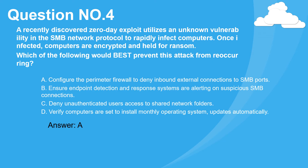A. Configure the perimeter firewall to deny inbound external connections to SMB ports. B. Ensure endpoint detection and response systems are alerting on suspicious SMB connections. C. Deny unauthenticated users access to shared network folders. D. Verify computers are set to install monthly operating system updates automatically. Answer: A.